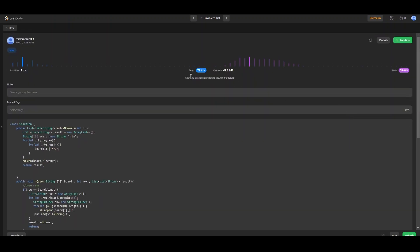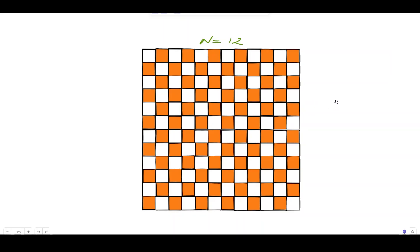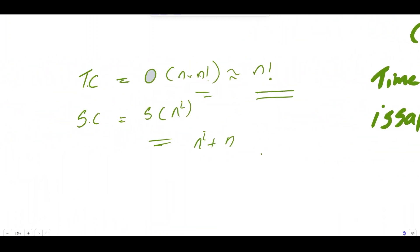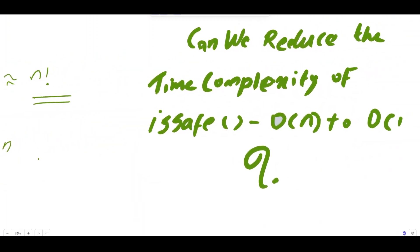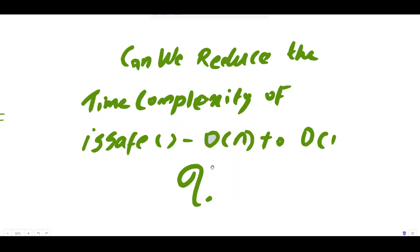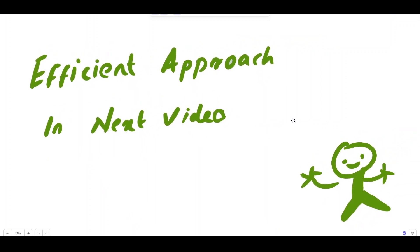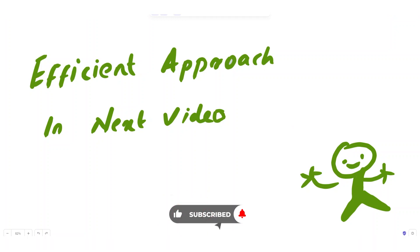We have successfully solved the N-Queens problem using backtracking in Java. You can try running the program with large inputs to see how the number of solutions grows exponentially with board size. The isSafe function has time complexity O(n) — in the next video I'll cover an efficient approach to reduce it to O(1). Please follow the channel. Until then, take care, thank you!